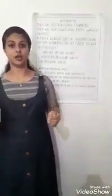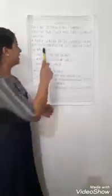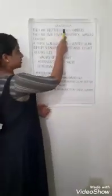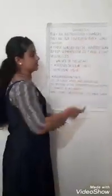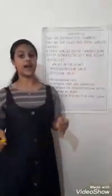The ventricles are the distributing chambers of the heart, while the atria are the receiving chambers. Blood received by the atria is passed on to the ventricles for distribution.